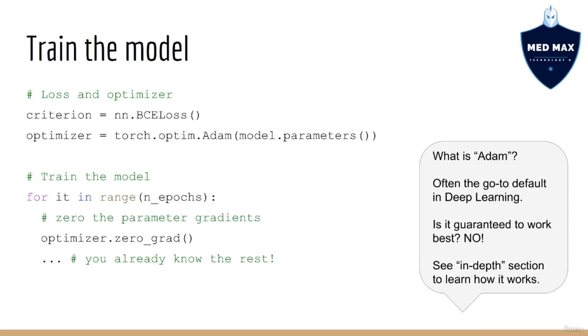What's different is that we'll be using a different cost function, but also a different optimizer. As mentioned previously, our loss function for binary classification is the binary cross-entropy, which is performed in the object BCELoss. In addition, we'll be using the Adam optimizer, which has become the go-to default in deep learning in recent years.